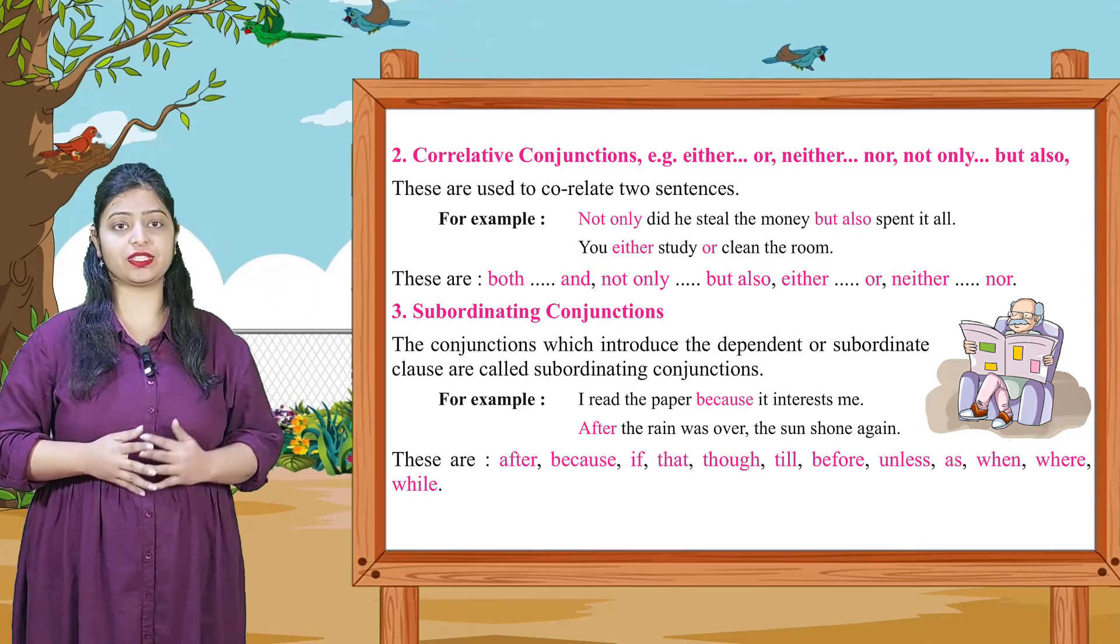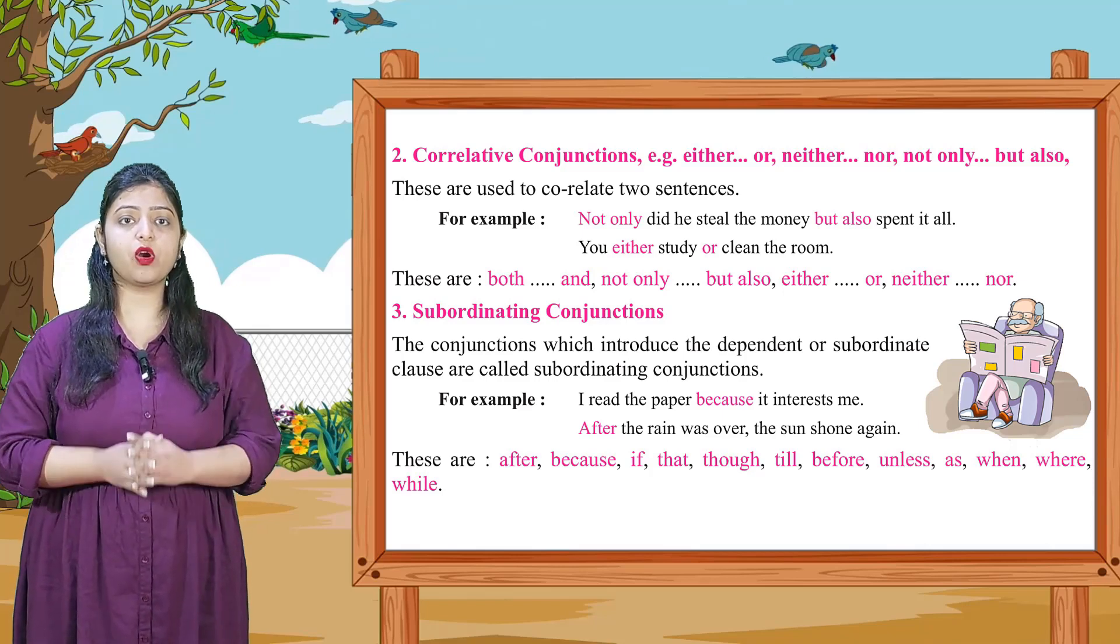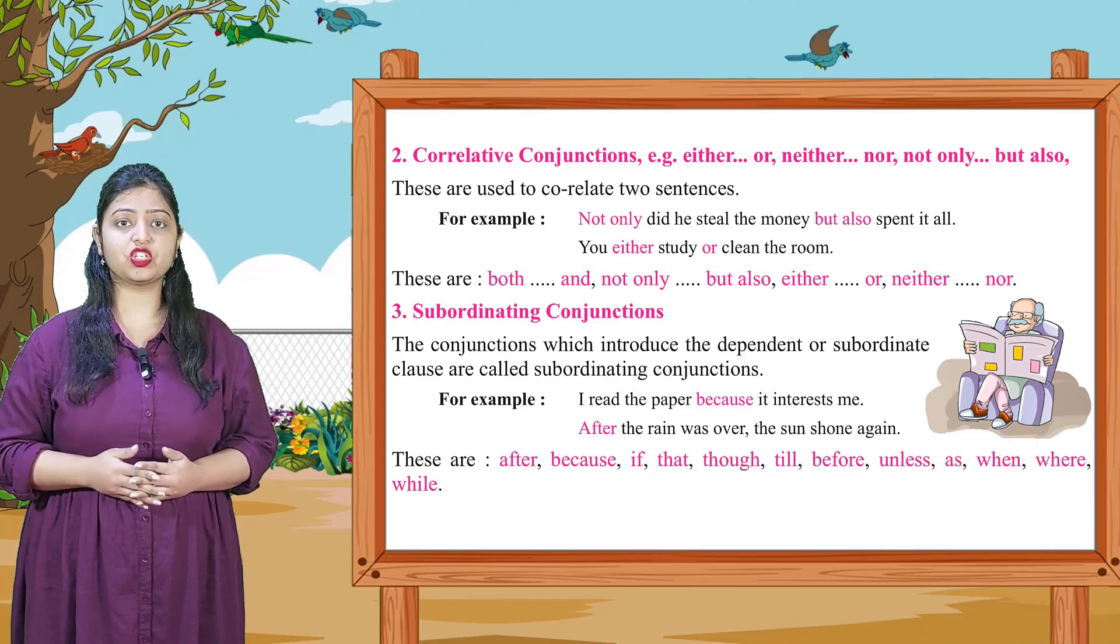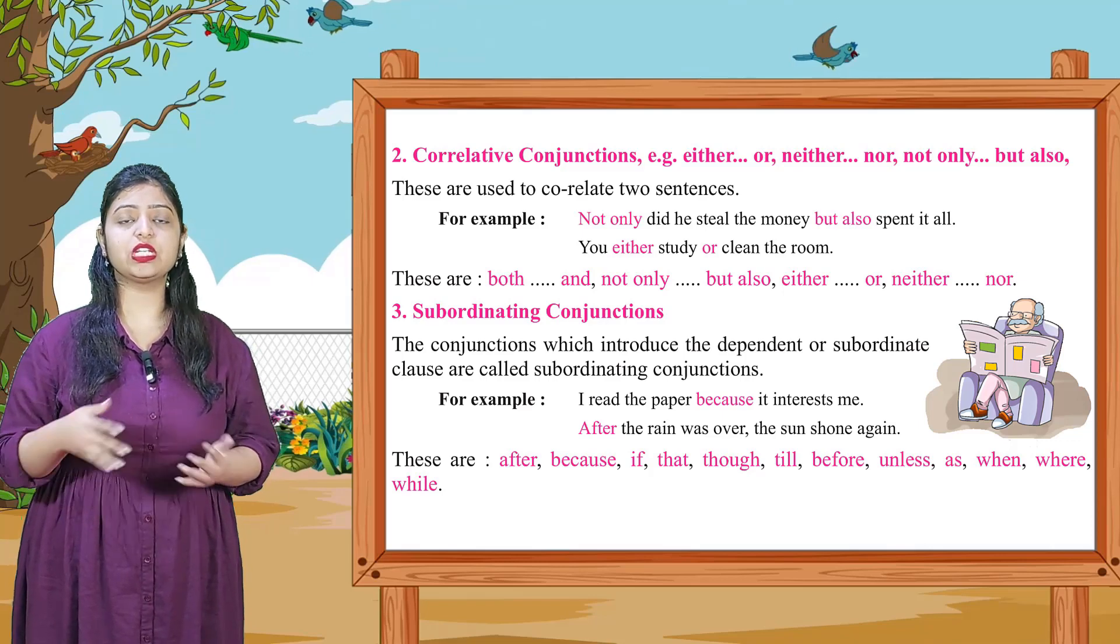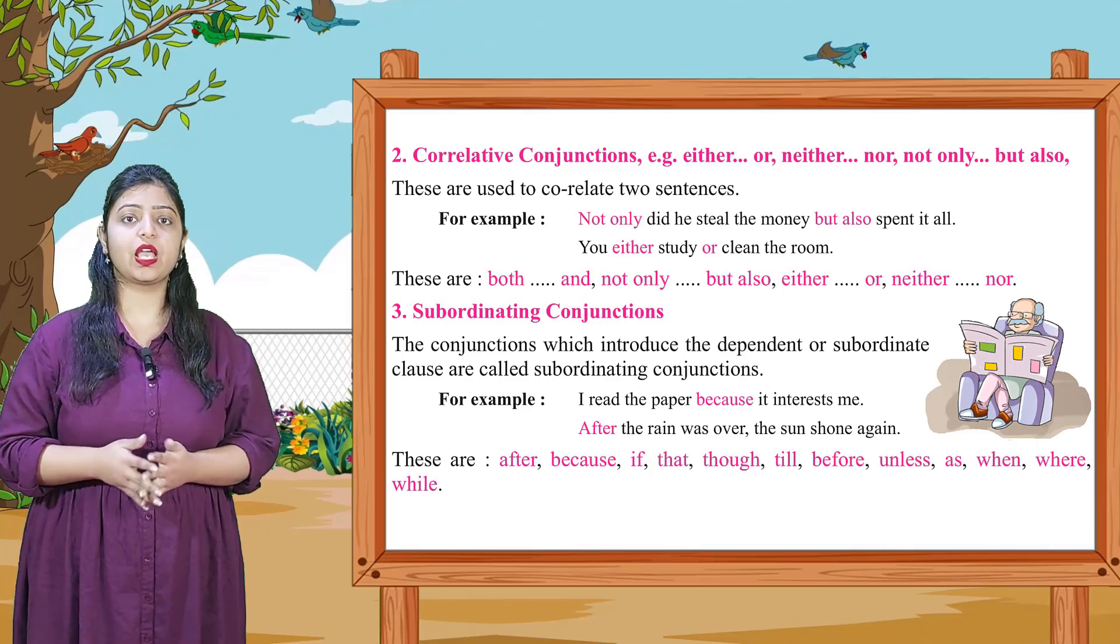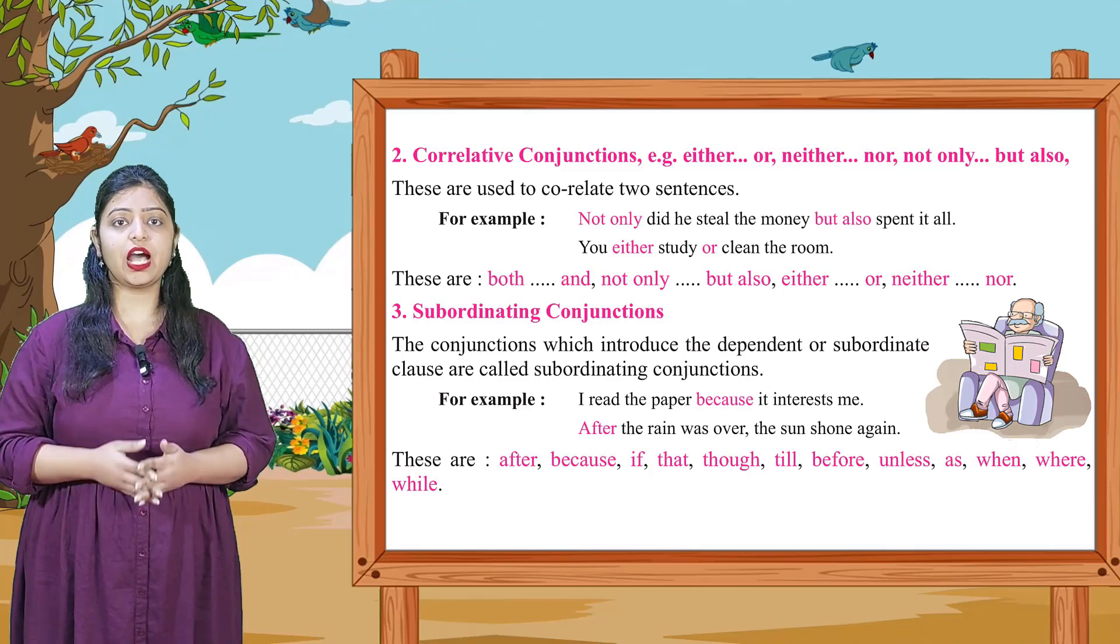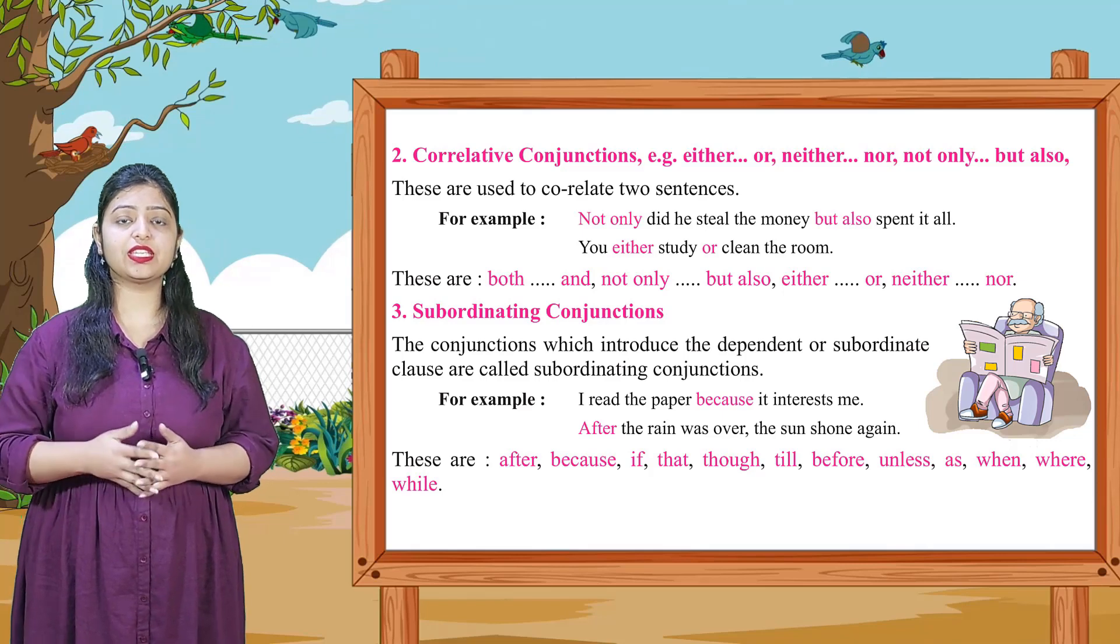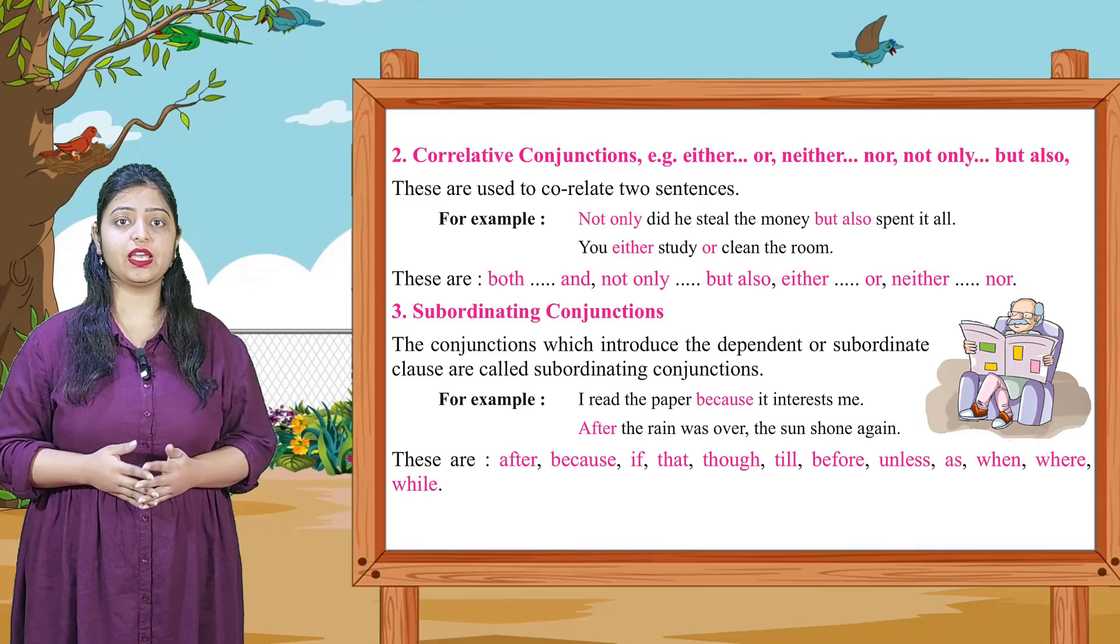Subordinating conjunctions. The conjunctions which introduce the dependent or subordinate clause are called subordinating conjunctions. These conjunctions introduce us to depend or subordinate to another clause. Examples: I read the paper because it interests me. After the rain was over, the sun shone again. As you have seen, because and after are subordinating conjunctions.